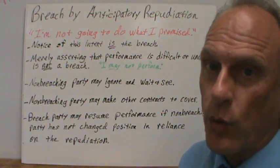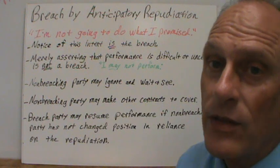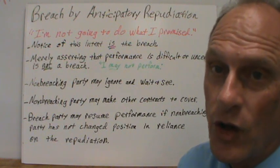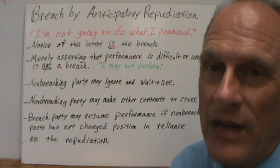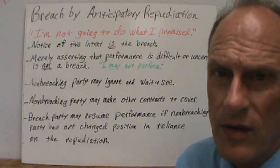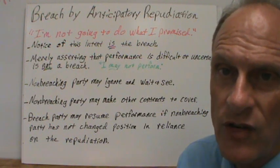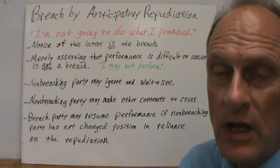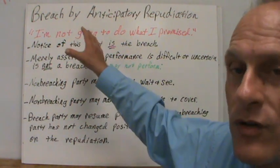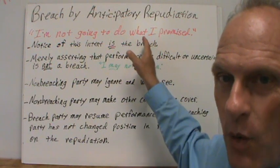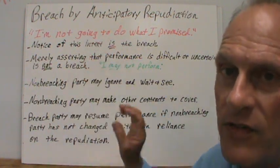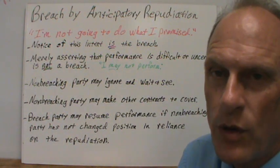Breach by anticipatory repudiation: in short, the party that made the promise is saying, 'I'm not going to do what I promised I was going to do.' They could have any reason — it might no longer be feasible, it might be impossible. But remember, a breach is an unjustifiable non-performance. If you repudiate the contract before you even perform, that's anticipatory repudiation — and just notice of that intent to not go through with the contract is the breach.